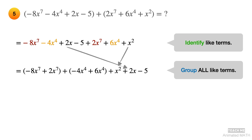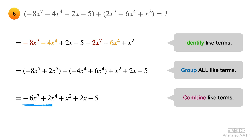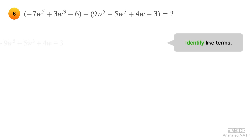Arrange the remaining terms in standard form. Last, combine like terms using addition and subtraction. And the final answer is negative 6x raised to 7 plus 2x raised to 4 plus x squared plus 2x minus 5.